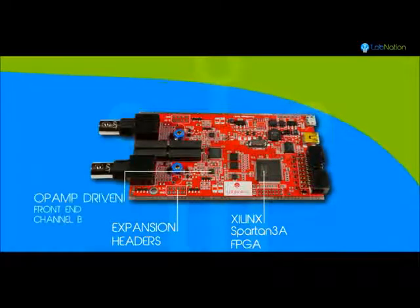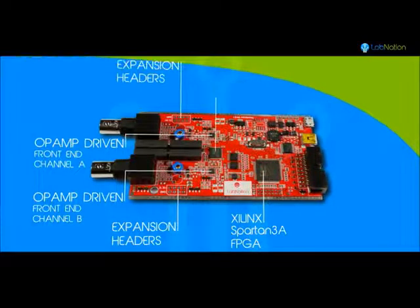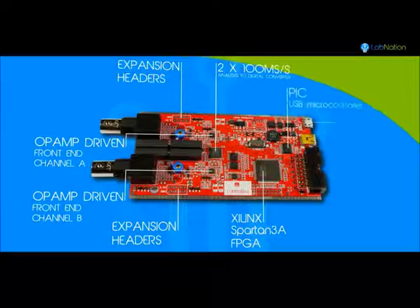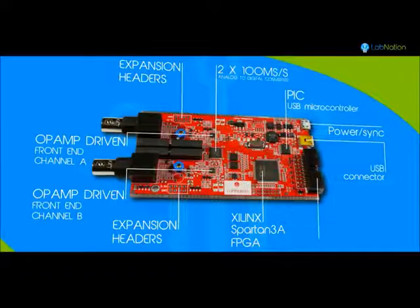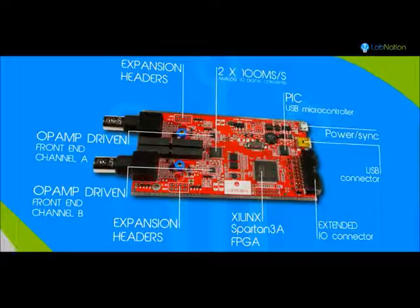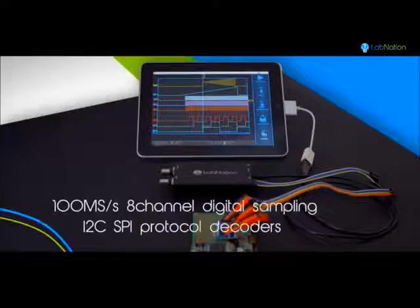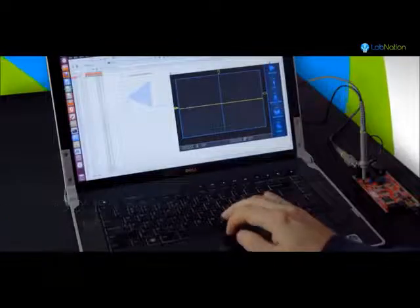The smart scope has an op amp powered analog front end with multiplying and dividing stages having an analog bandwidth of 50 megahertz. It's controlled by a powerful and flexible FPGA which is forwarding the data towards the USB controller. Additionally, the smart scope can sample eight digital channels at 100 mega samples per second.